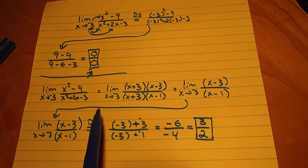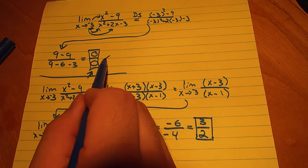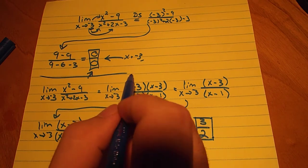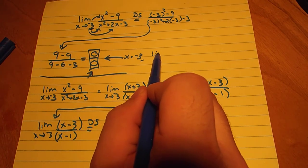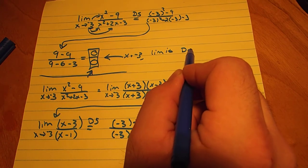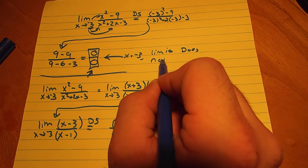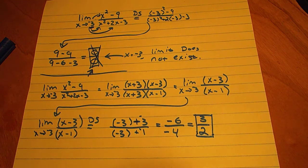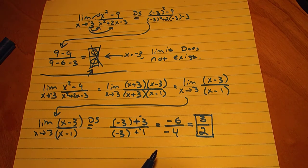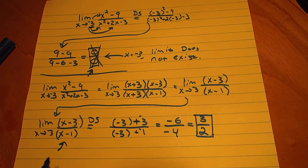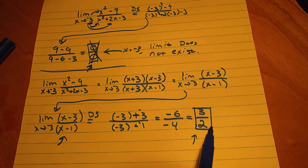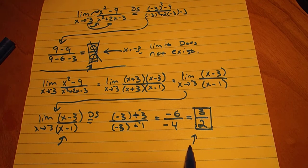So from before, we saw that at exactly x equals negative 3, there is no limit. Does not exist. But when we reduce it down to a simpler form such as this, we see that the limit as x approaches negative 3 actually does exist.